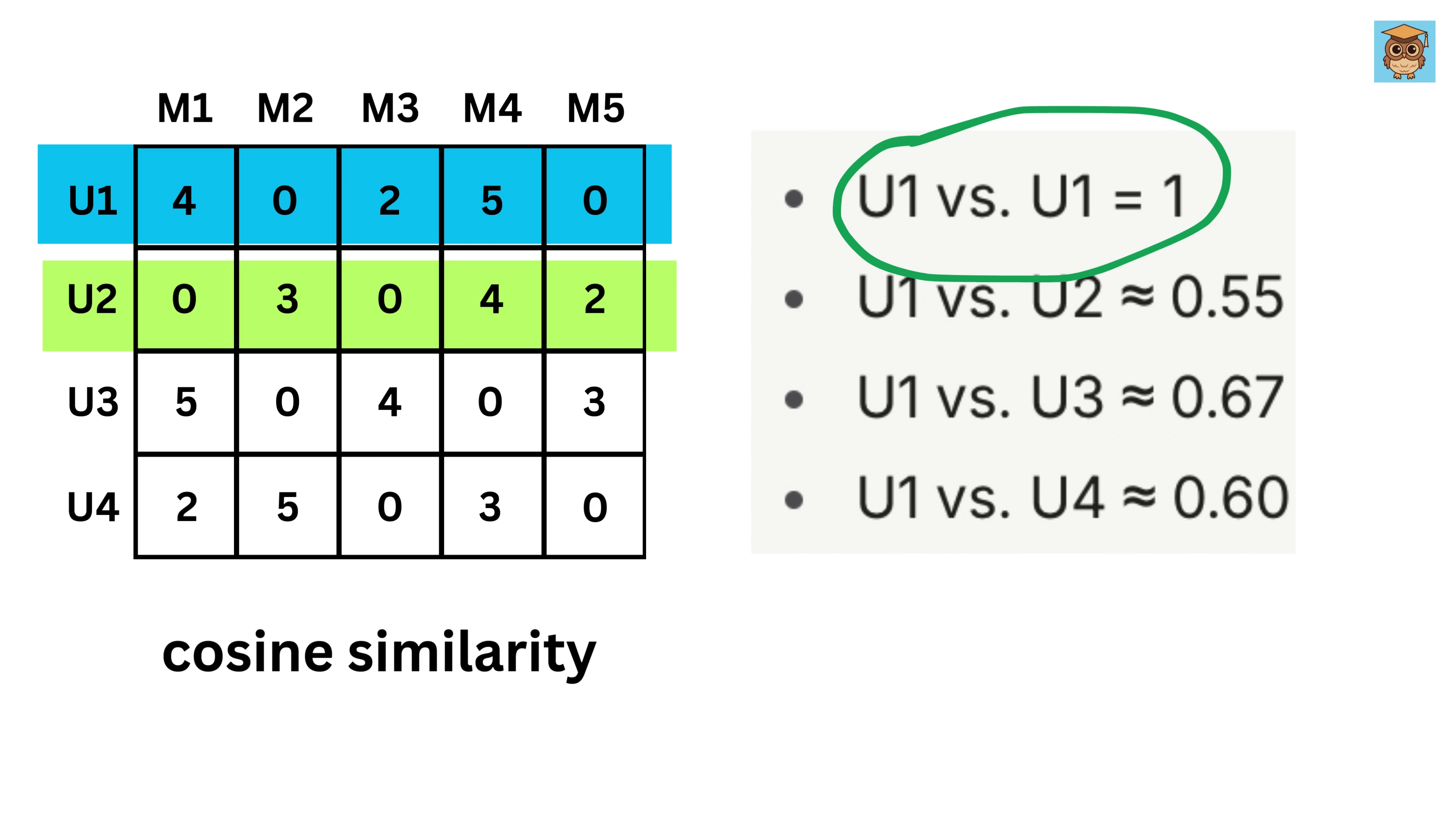Now repeat this for user one versus all other pairs. What do you think will be the similarity score of user one versus user one? Yeah, obviously it will be one, because who can be more similar than the person himself. So user one's similarity scores with others are this.